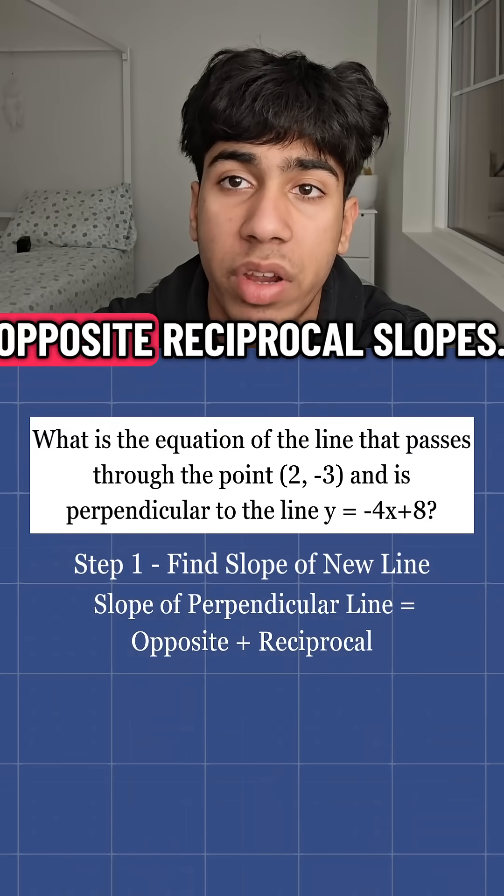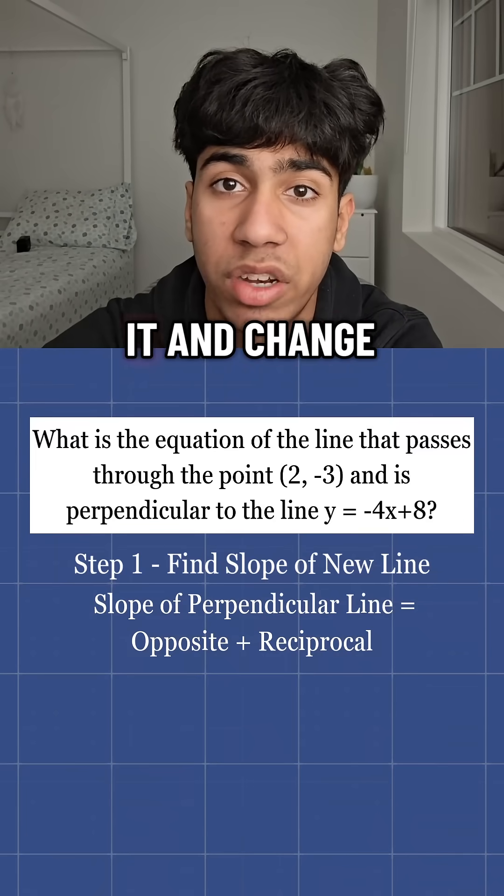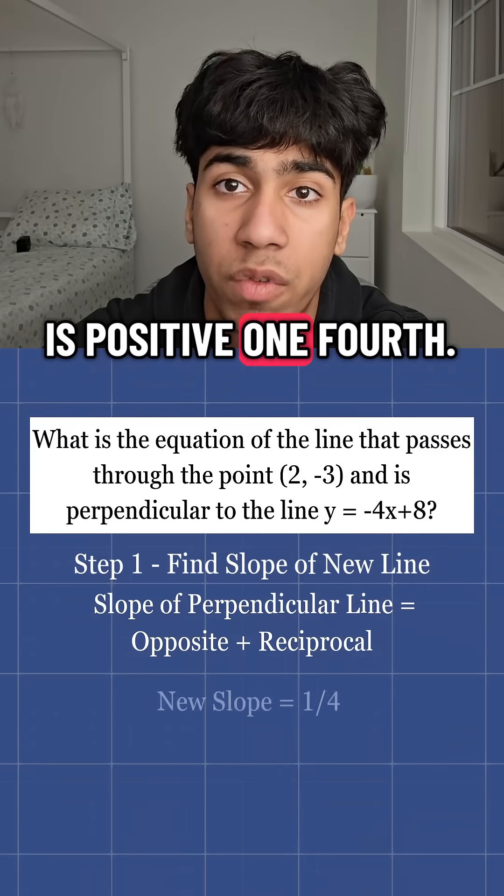Perpendicular lines have opposite reciprocal slopes. The slope of the given line is negative 4, so let's flip it and change the sign. The new slope is positive 1/4.